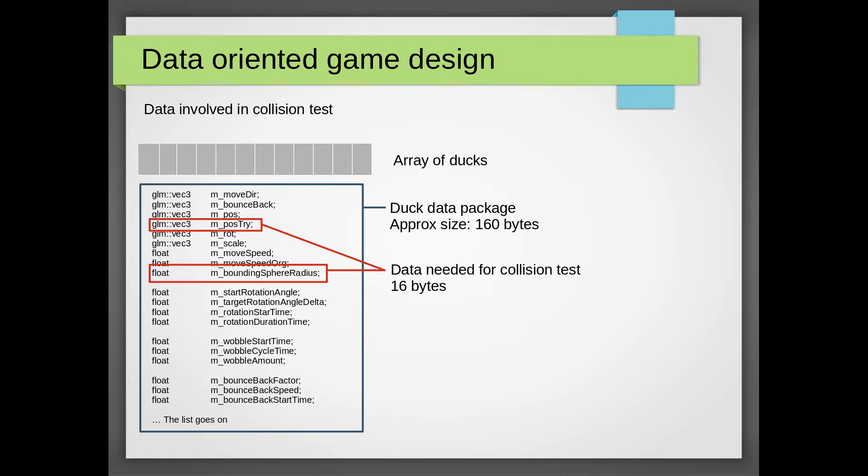Now let's look at the memory that we will be working with to accomplish this. We will work on an array of ducks and each duck will contain all the data needed for this duck including its position, rotation, some data to make it wobble in the water and so on. All in all this amounts to about 160 bytes of data for each duck.